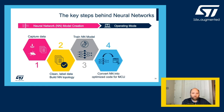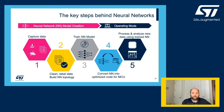With step number four, we are diving back into the STM32 world. We import the trained neural network model into the STM32 Cube AI tool, where it is analyzed and optimized and then converted into optimized code for the STM32. Finally, in step number five, we run the generated neural network code — also called inference — on the STM32 MCU or MPU.